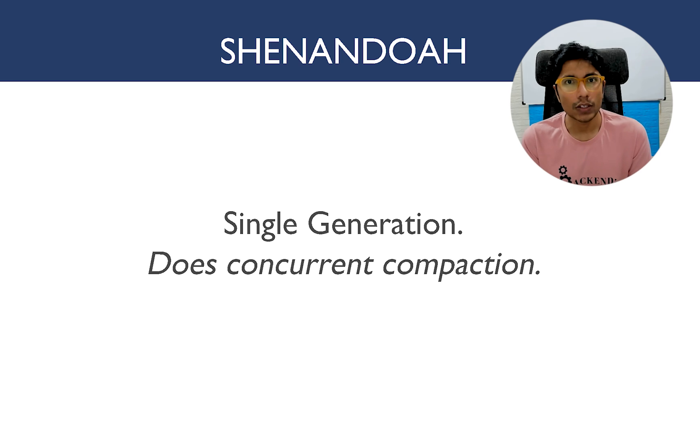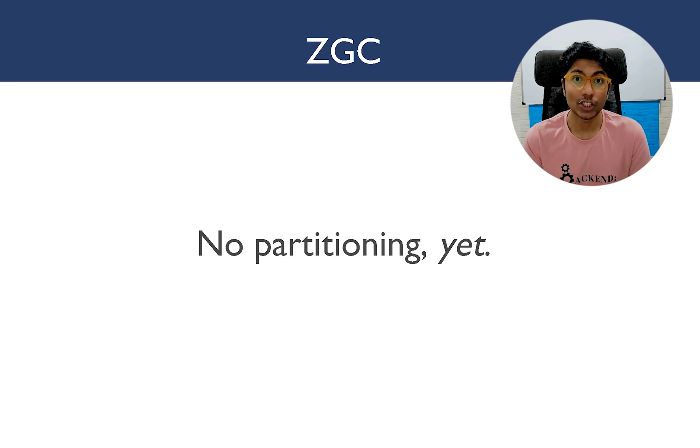Now there are two garbage collectors in Java which do concurrent compaction. One is Shenandoah, it has a single generation. It doesn't believe in the generation hypothesis, and the second one is ZGC. Of course, if you are looking for non-Oracle implementations, then you can also go for C4. What they claim is that it's a better garbage collector than anything out there. Shenandoah and ZGC seem to be heavily inspired, but that's my personal thought.